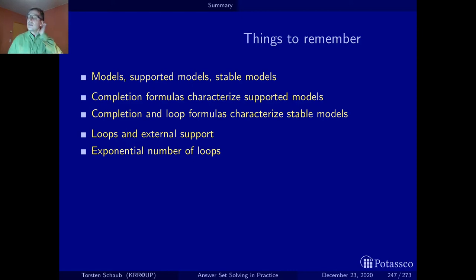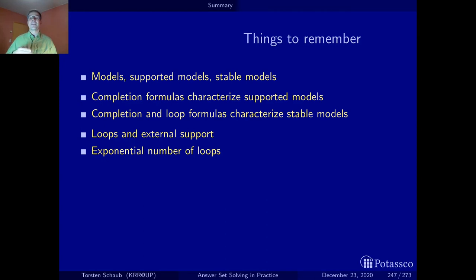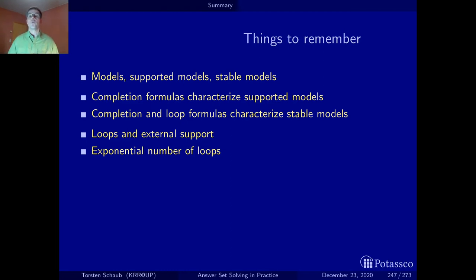As you've just seen on the previous slide, we can still refine the definition of a loop and also allow some of the most trivial strongly connected components. This would add loops to the setting that are singleton, and we would get a singleton loop for each atom. This would actually account for the necessary completion formulas.